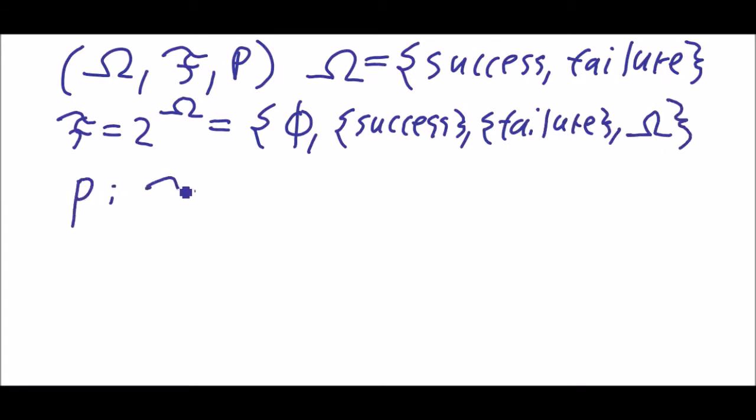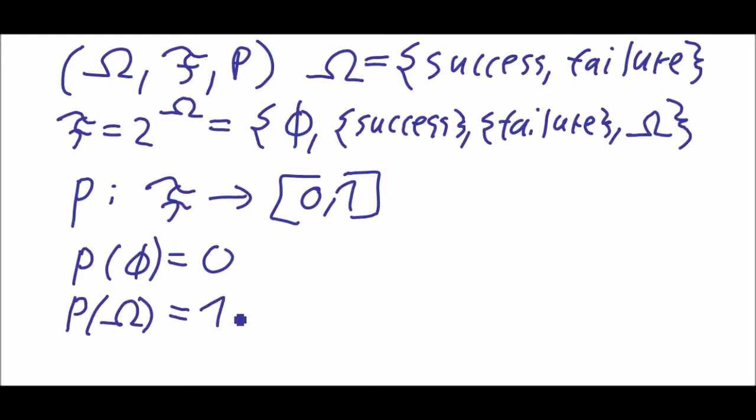P goes from F to [0,1] as we have seen. And now let's have a look at the elements of F. So P of empty set is 0 of course, and P of omega is 1 by definition. P of success is p, little p, with little p between 0 and 1.